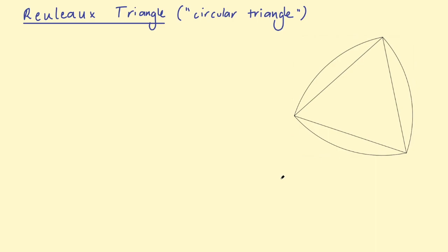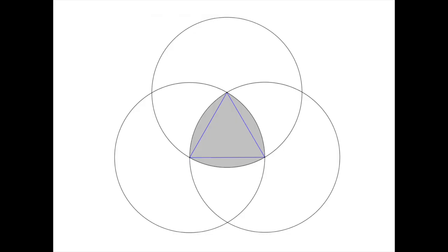In this video I'm going to be taking a look at a Reuleaux triangle, sometimes called a circular triangle — that's this shape here. You can make this shape by firstly drawing an equilateral triangle, then drawing three circles with the same diameter on the points of that equilateral triangle, with the centers of the circles on those points. The shape you get in the center of that diagram is a Reuleaux triangle, as you can see on the screen now shaded in gray.